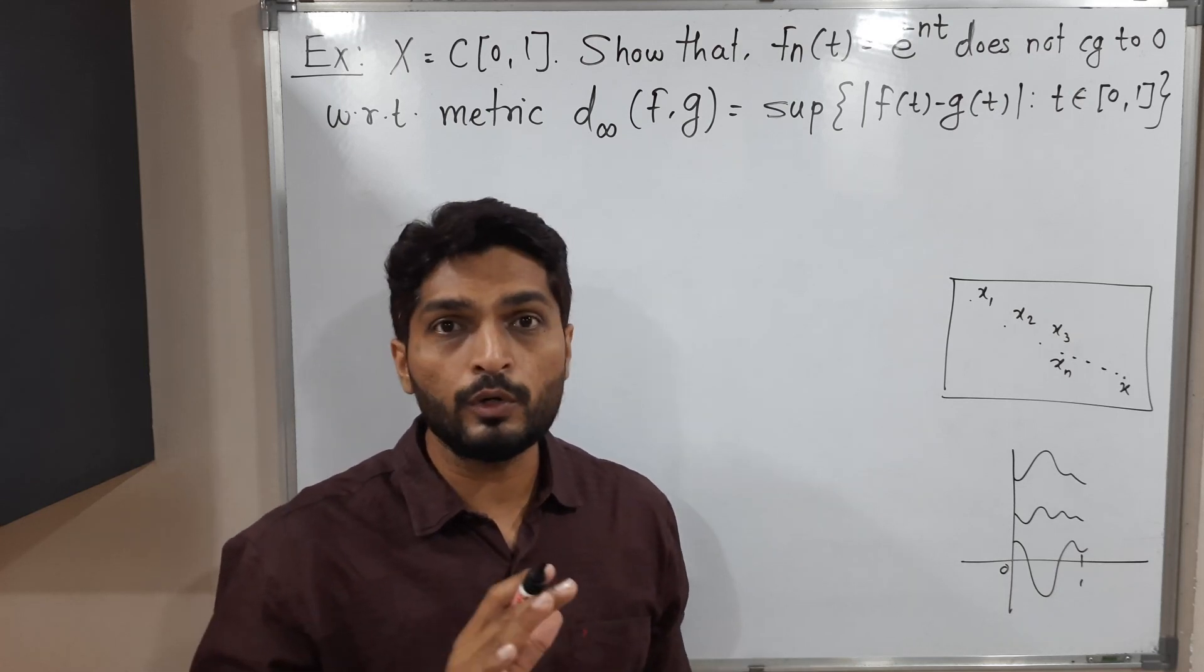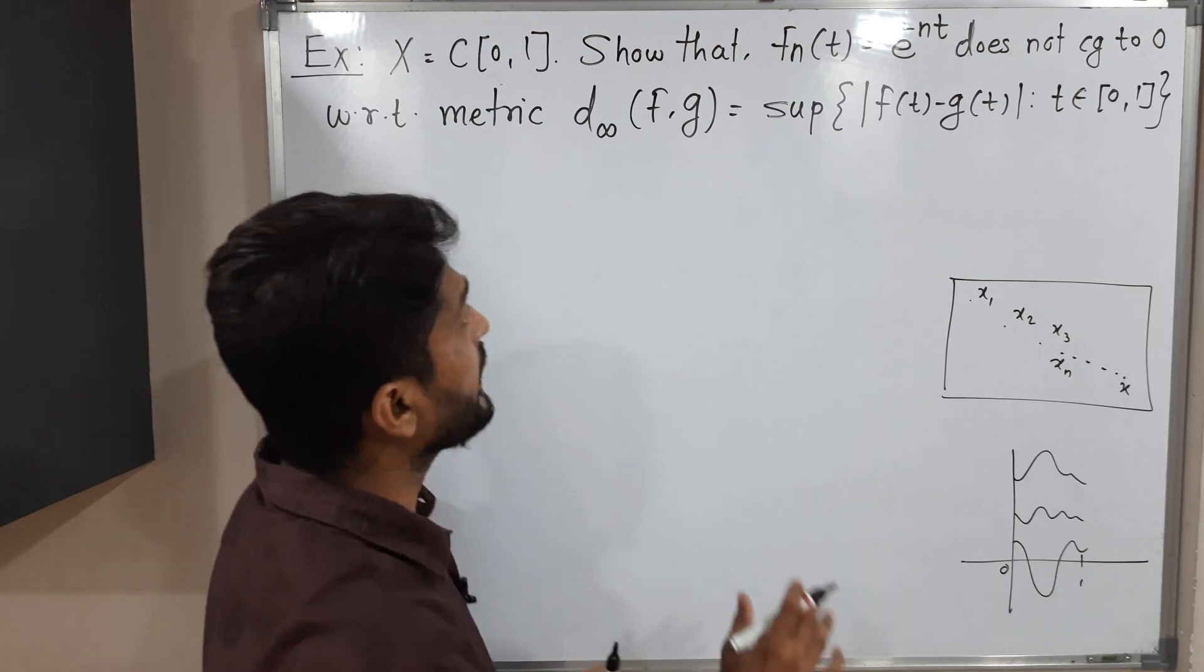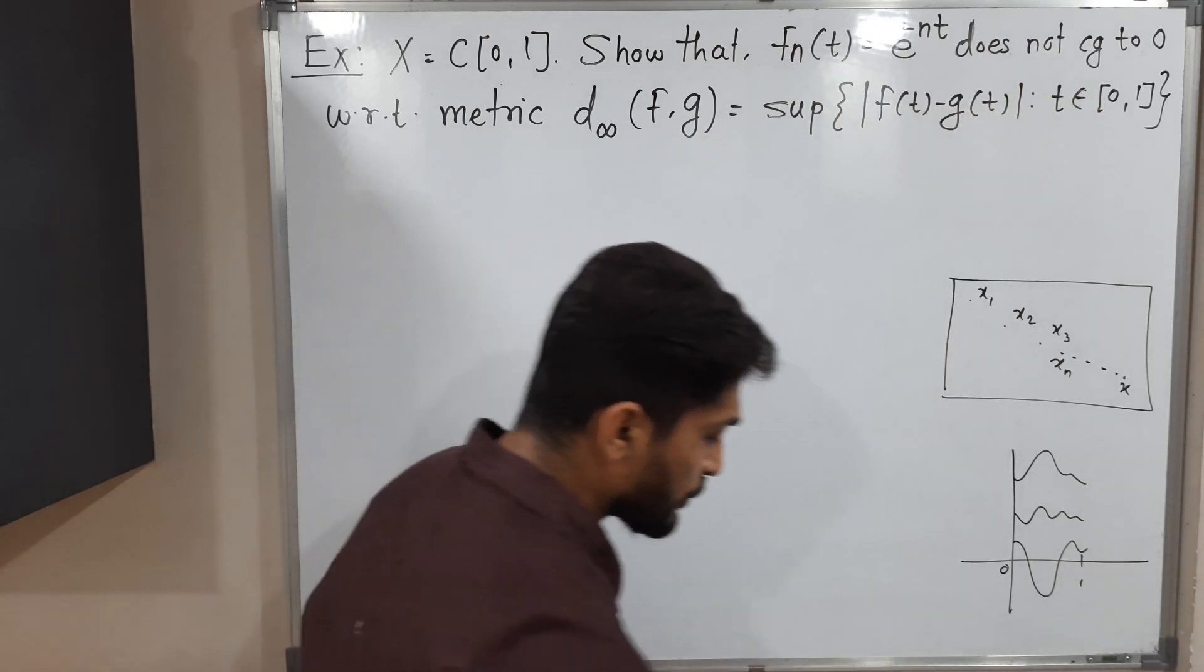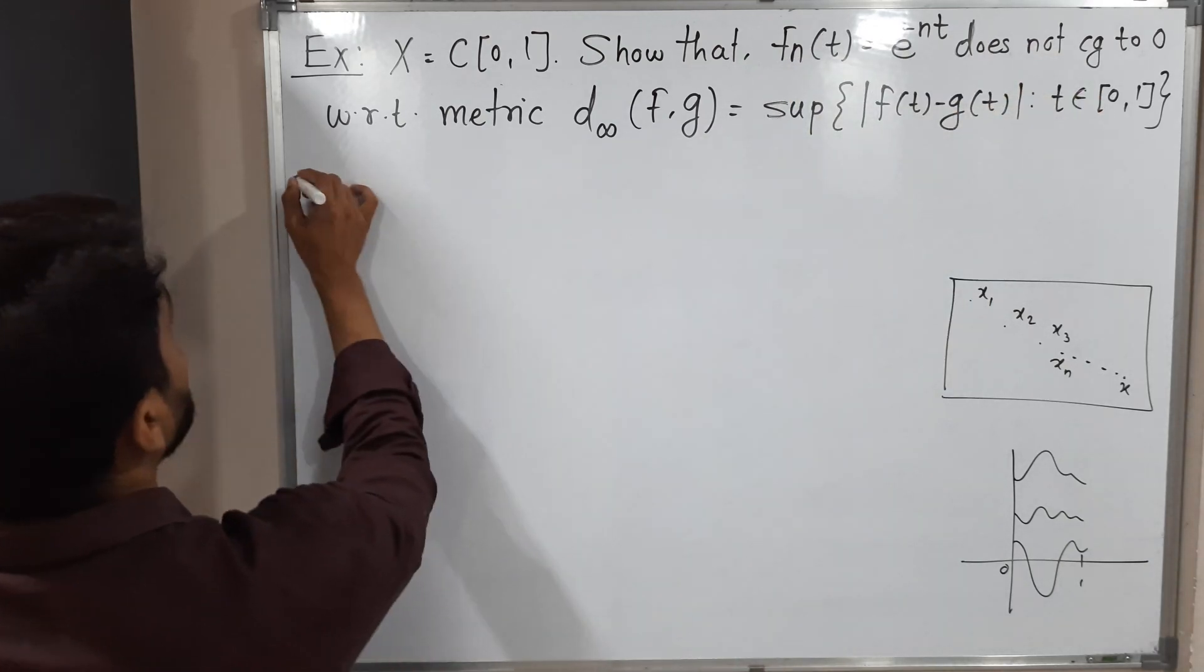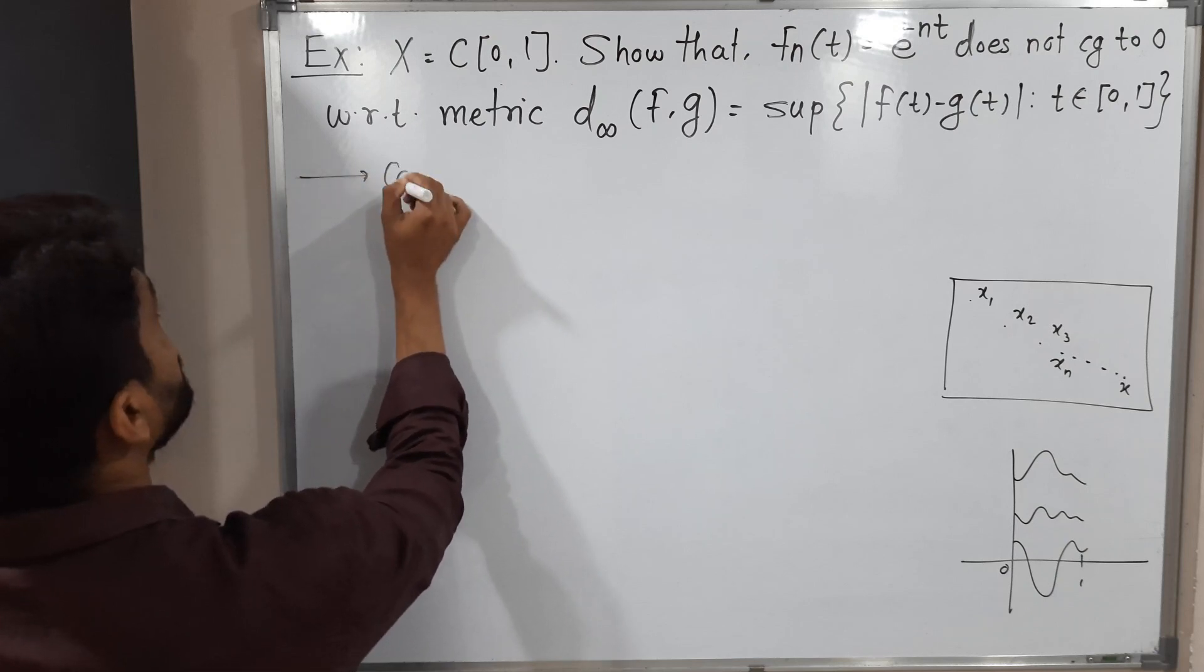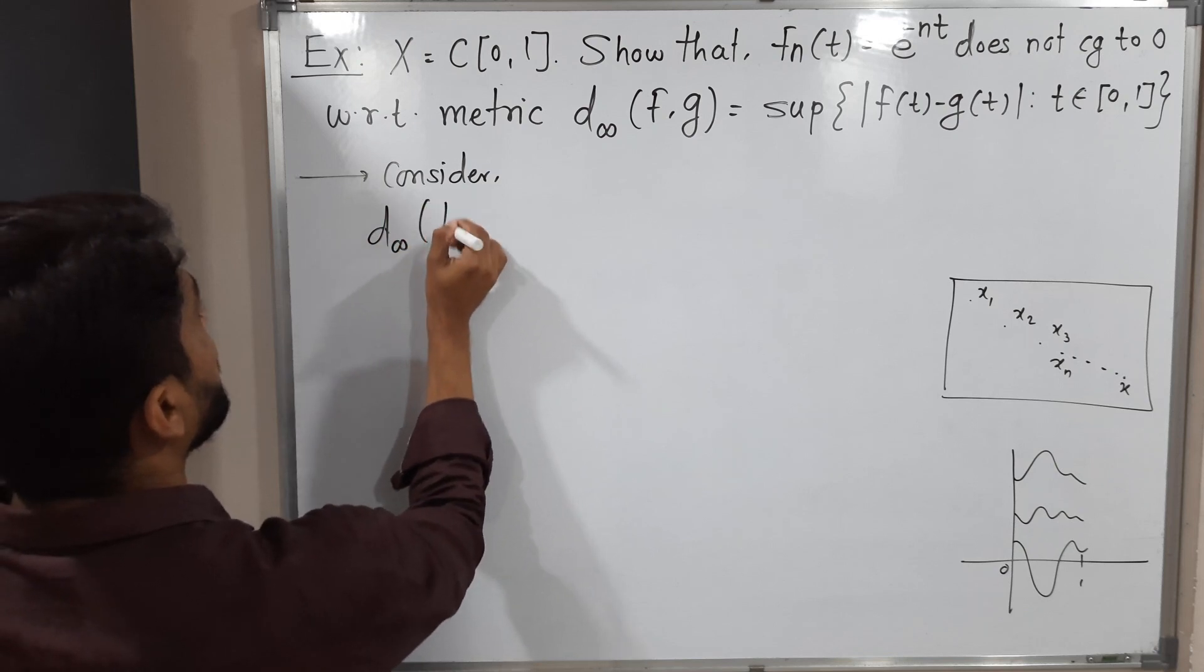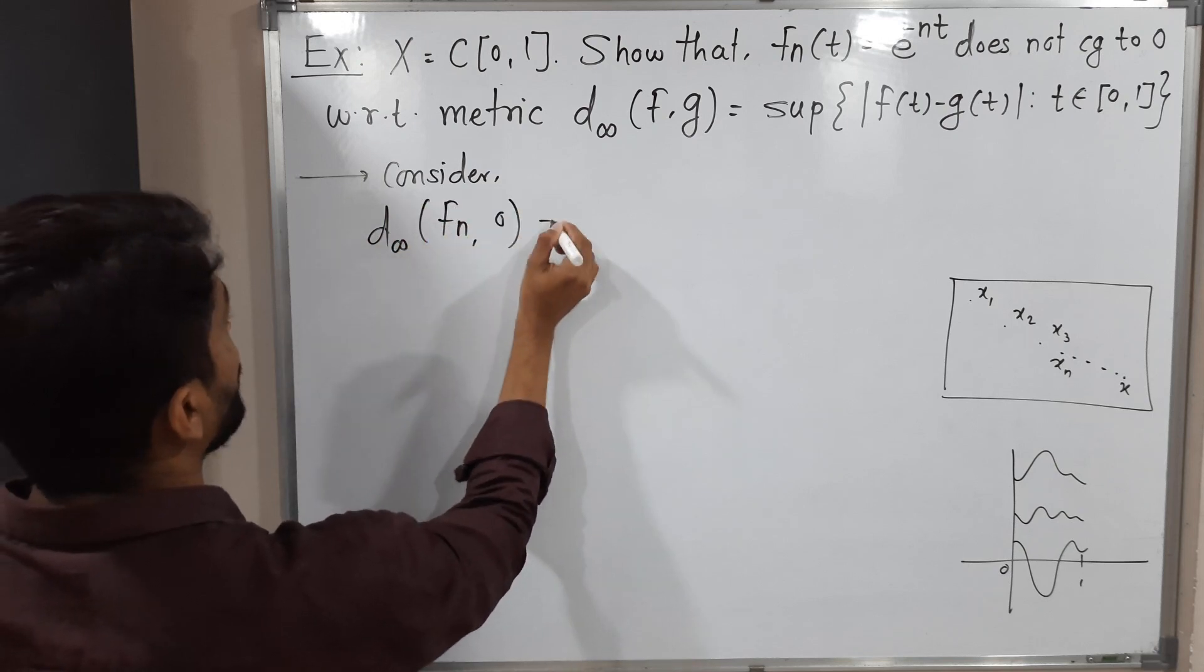Similarly, here we will find the distance between Fn(t) and 0. So let us do that. Consider D∞(Fn, 0).